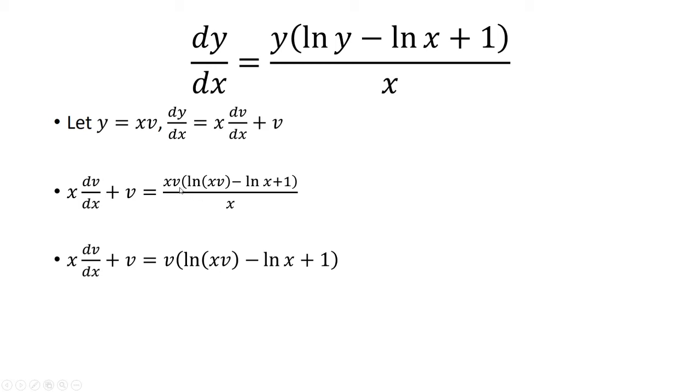Now, keep in mind, this xv is multiplying both ln of xv, negative ln of x, and actually plus 1 as well. So I can cancel out the x here, and I'm going to have v times these three terms.